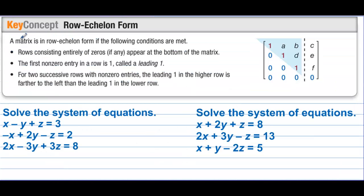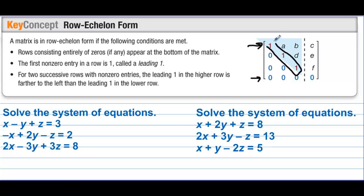Row echelon form: a matrix is in row echelon form if the following conditions are met. Rows consisting entirely of zeros, if any, appear at the bottom of the matrix. The first non-zero entry in a row is 1, called a leading one. For two successive rows with non-zero entries, the leading one in the higher row is farther to the left than the leading one in the lower row. In other words, we want the diagonal to all be ones.